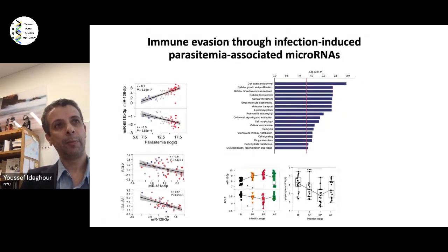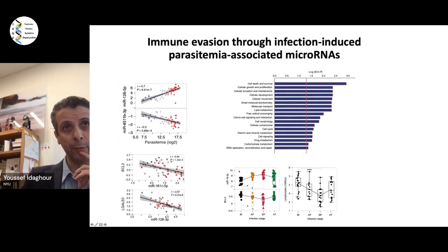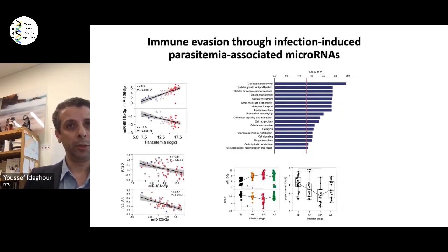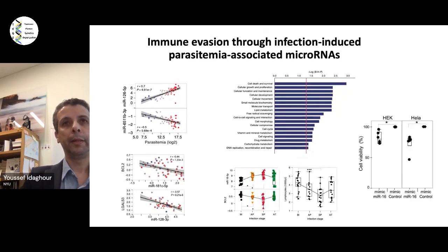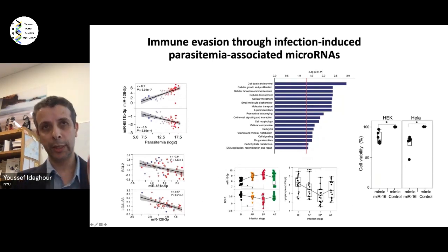Looking at data from the replication study and the discovery study, we see a very nice anti-correlation across all stages of infection — you can clearly see that when this microRNA goes up, the BCL2 target gene goes down. We decided to look at this further because the potential consequence is triggering apoptosis of immune cells. Using lymphocyte counts generated from these children, we see a very nice correlation between lymphocyte counts and BCL2, and an anti-correlation between the microRNA and lymphocyte counts, hinting at an effect on lymphocyte counts.